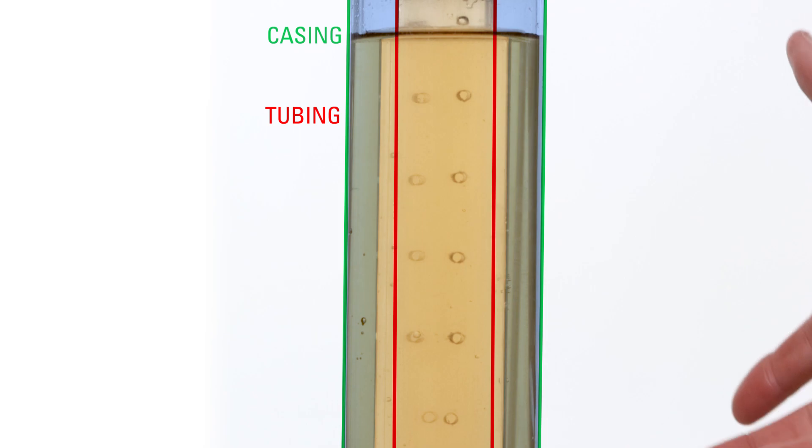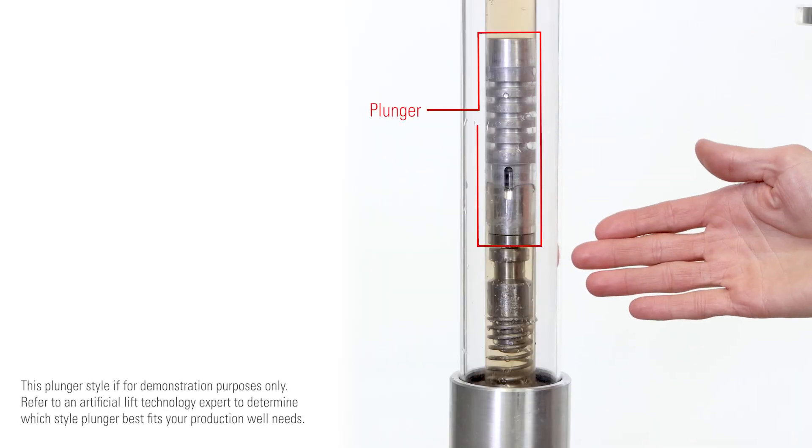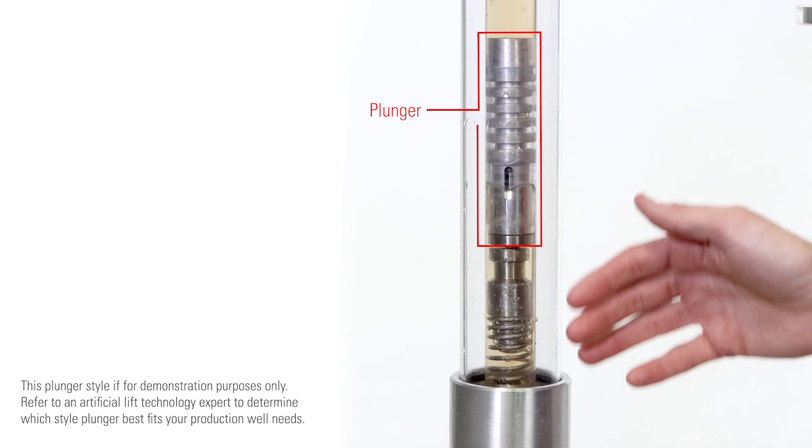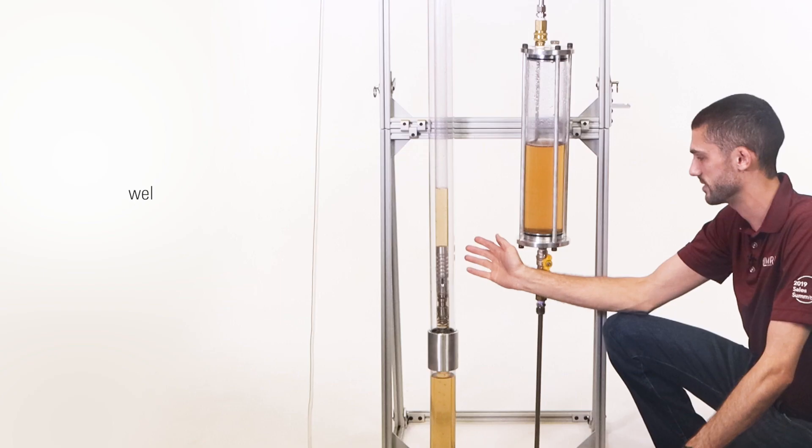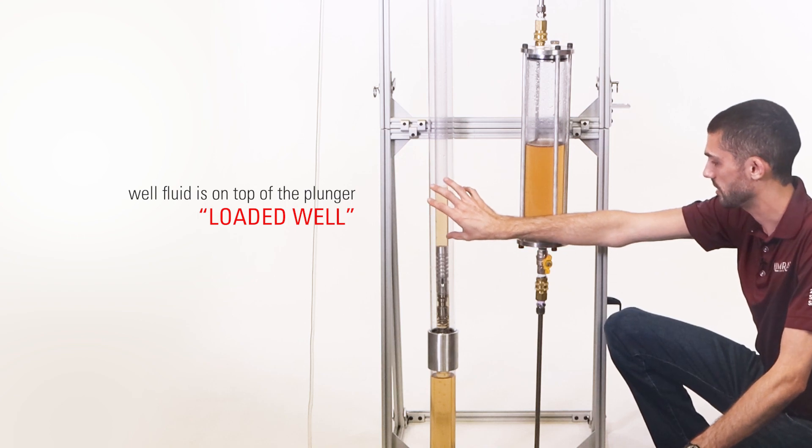In the state it's in now, the surface valve is closed. The plunger is at the bottom of the well. There is some fluid that's on top of the plunger right now, so this would be considered a loaded state. So the well is loaded with a column of fluid.